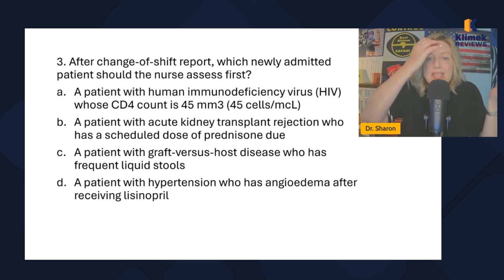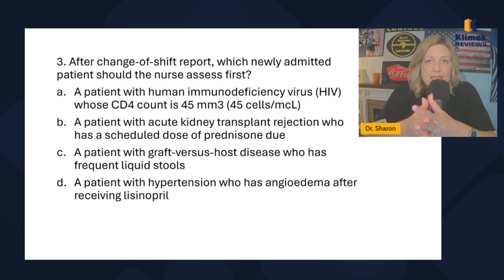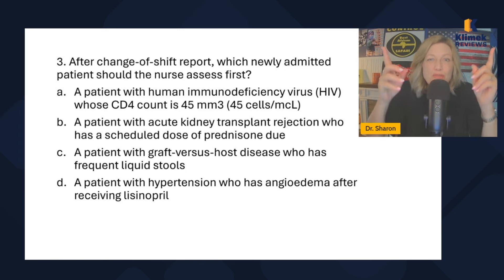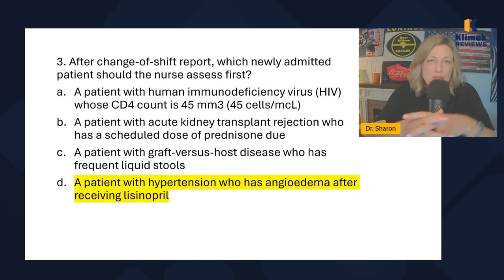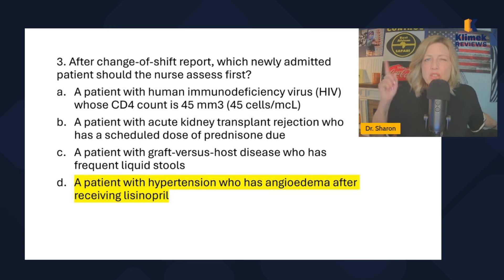Now I have to decide between B and D. Patient B needs their prednisone, but which patient do I know for sure is unstable? The patient who's having an adverse effect — that's D. You always go with the answer you're certain about, not the one you're unsure about. I wasn't sure about B, so I had to go with D.